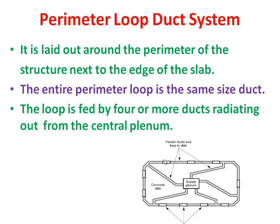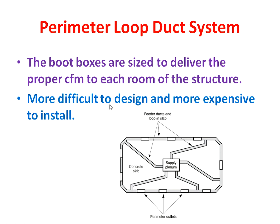The perimeter duct is always constructed at the edge of the slab. The perimeter loop has the same duct size throughout its entire length — there is no change in size. The loop is fed by four or more ducts radiating from the central plenum, with four to five ducts supplying air from the supply plenum to the perimeter duct.